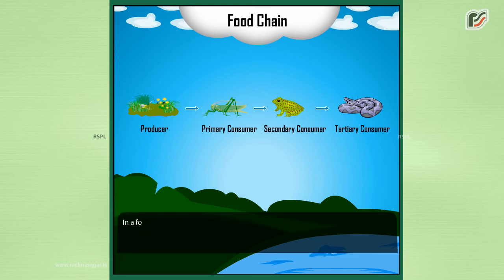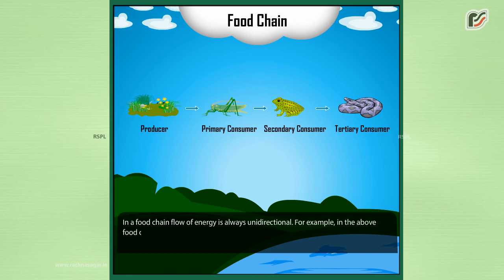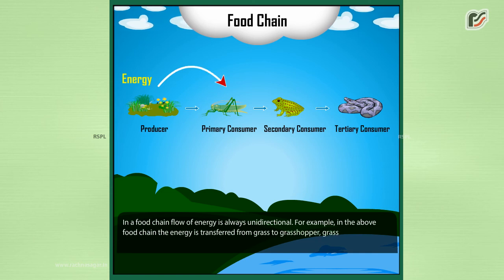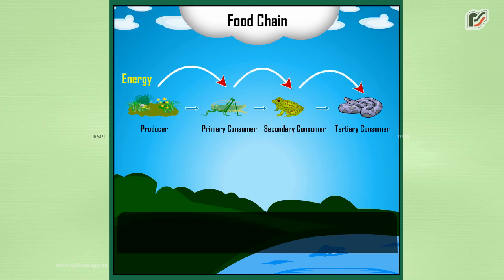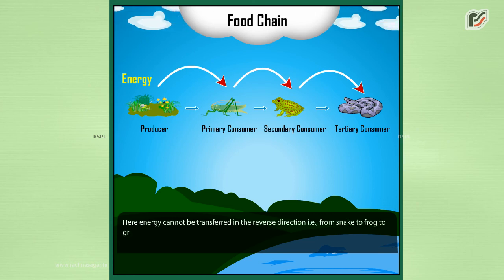In a food chain, the flow of energy is always unidirectional. For example, in the above food chain, the energy is transferred from grass to grasshopper, grasshopper to frog, and then to snake. Here, energy cannot be transferred in the reverse direction, i.e., from snake to frog to grasshopper to grass.